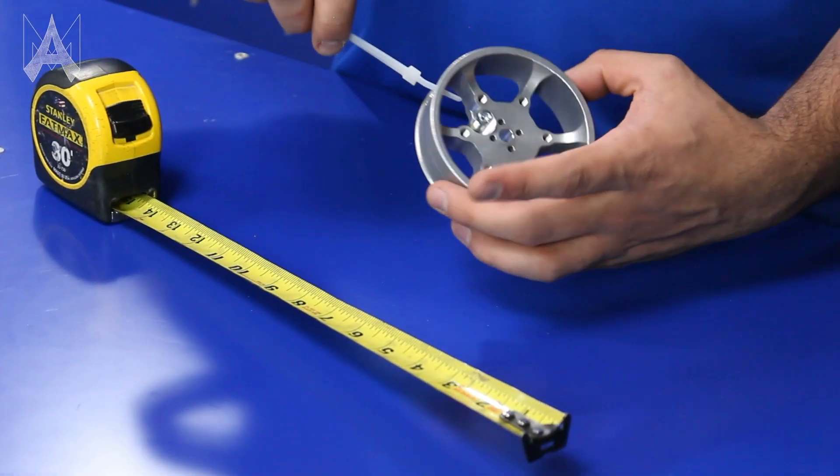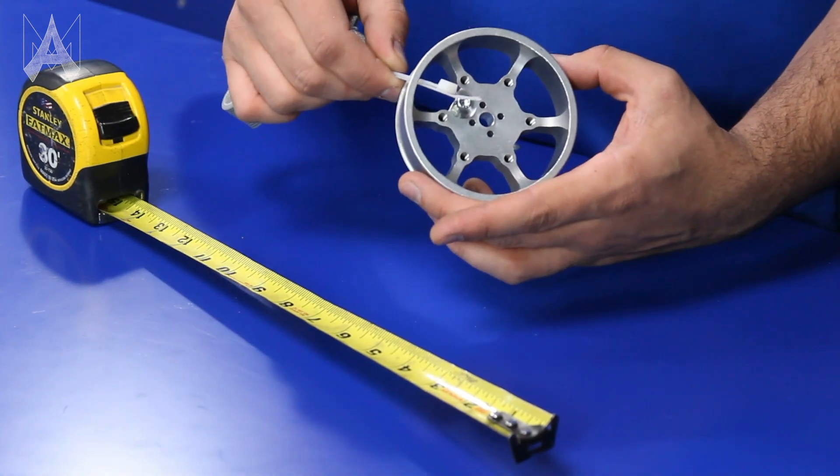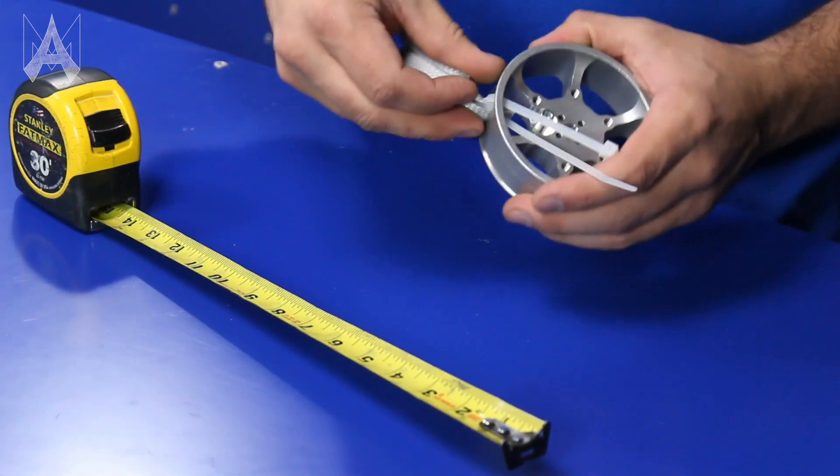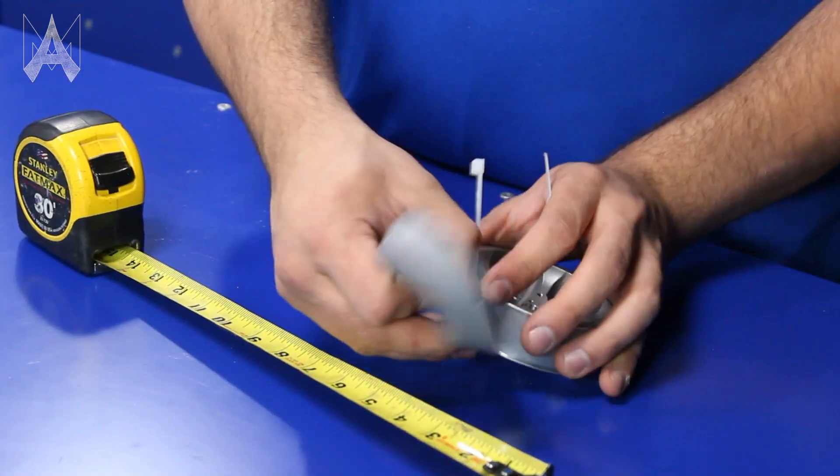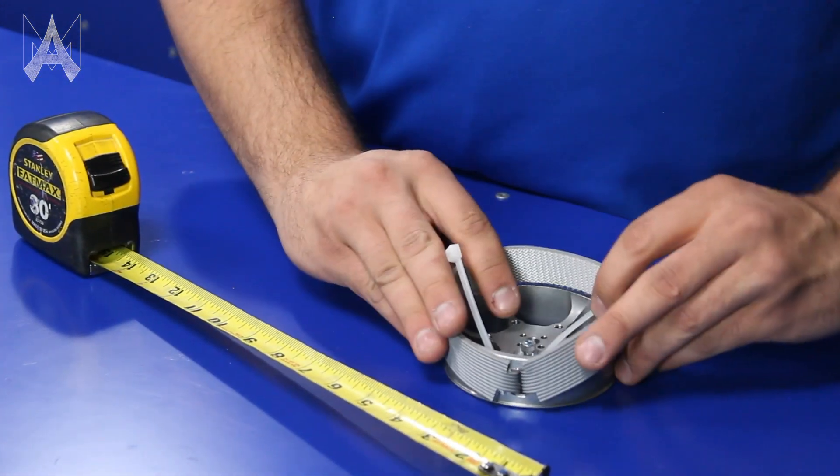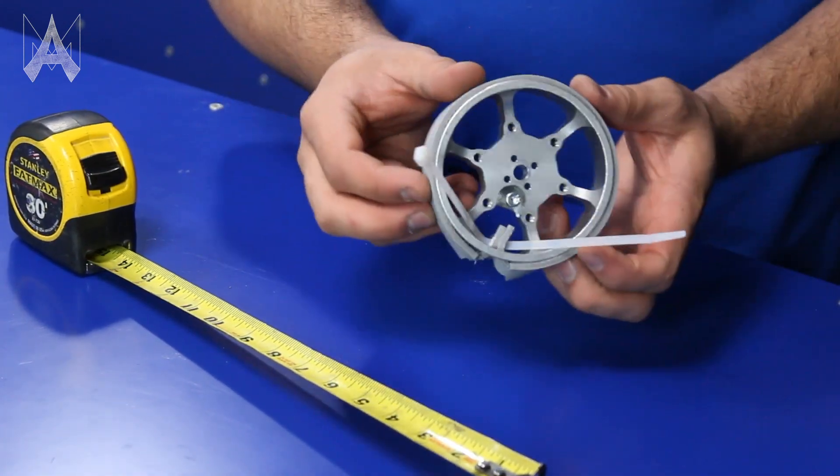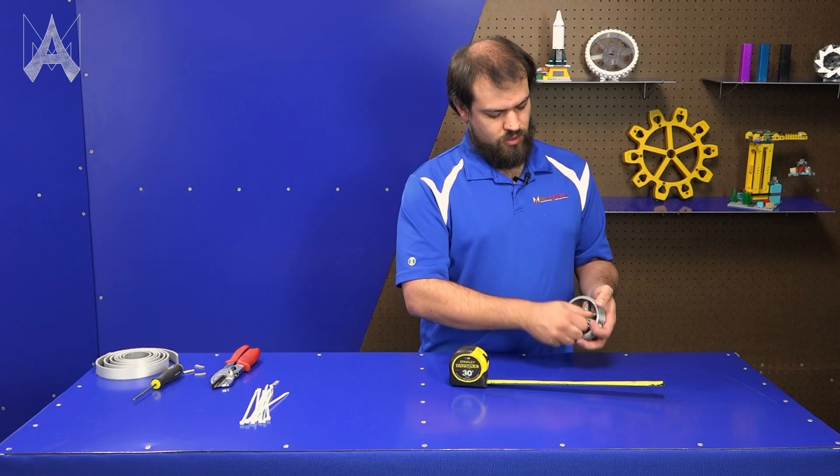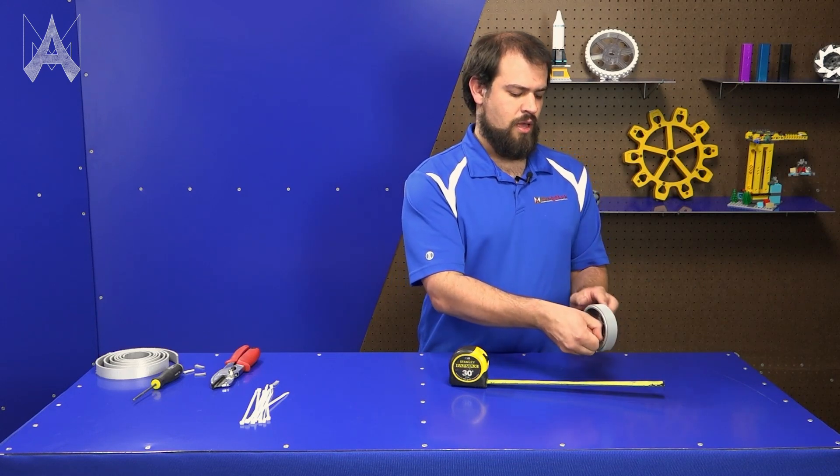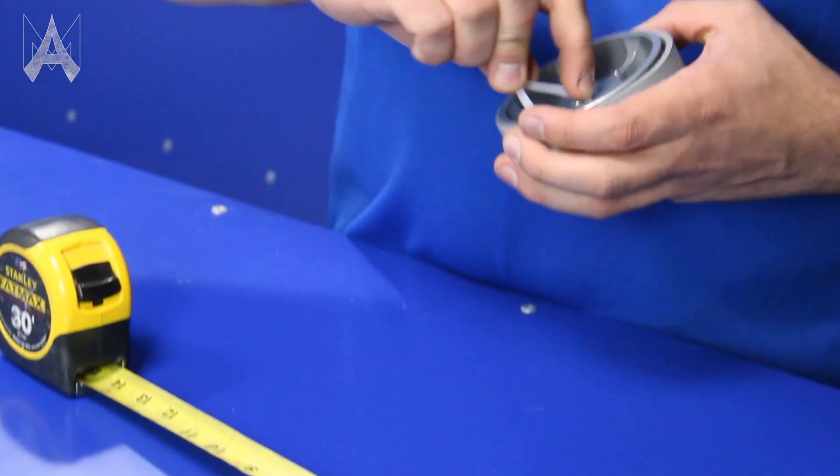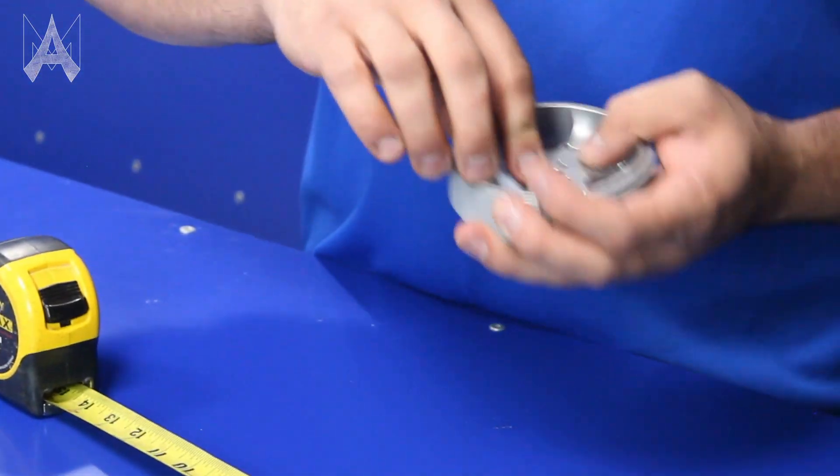Now feed the zip tie with the bit of tread through the hole in the wheel going out toward the front. Then fold the tread around the wheel. Now the tread's on the wheel, the zip tie's through and you want to pull this tight so the tread is snug to the wheel and between both ridges all the way around. Take the zip tie and feed it around the screw.